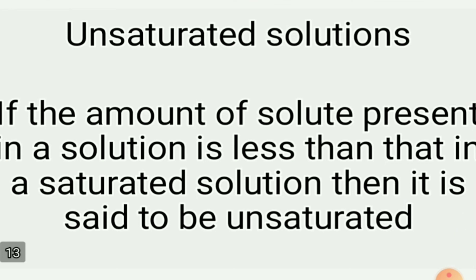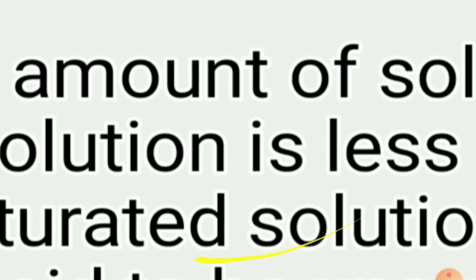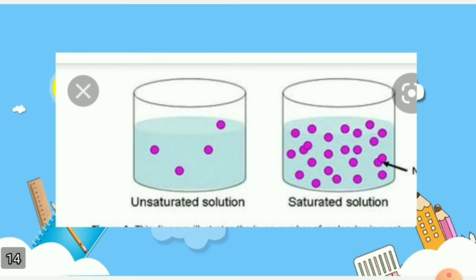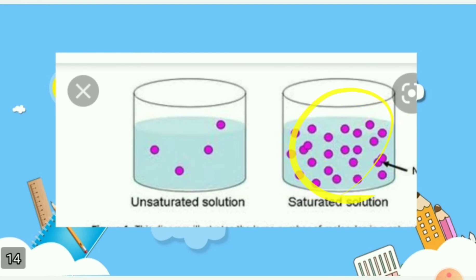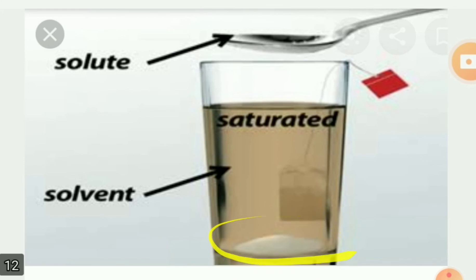In an unsaturated solution, the solvent still has the capability of dissolving more solute. Through these slides I can clearly show you unsaturated and saturated solutions. In the unsaturated picture, there are still many gaps in the solvent which have the capability to dissolve more solute particles. If you keep adding solute beyond that capacity, undissolved solute remains at the bottom — that is a saturated solution.